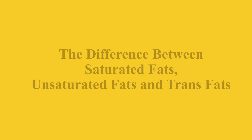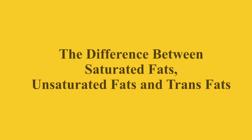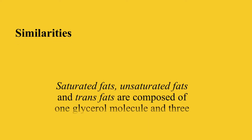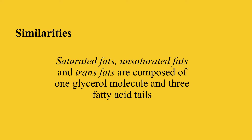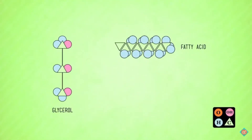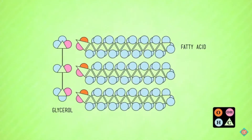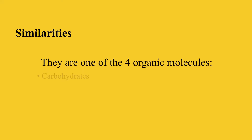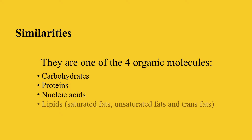To understand the difference between saturated fats, unsaturated fats, and trans fats, let's first look at some similarities. All three are composed of one glycerol molecule and three fatty acid chains. When they combine together, a triglyceride is formed — this is another name for fat. All three fall under the category of lipids, which is one of the four organic molecules.